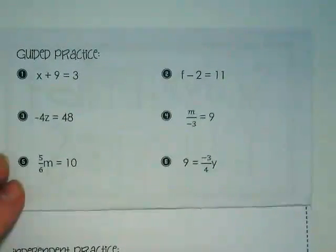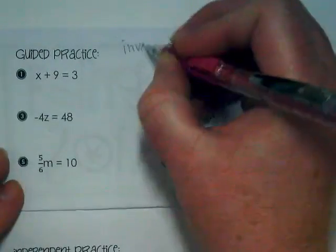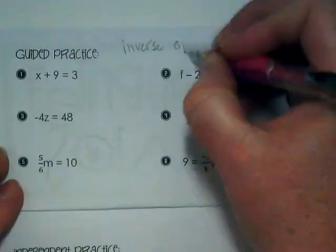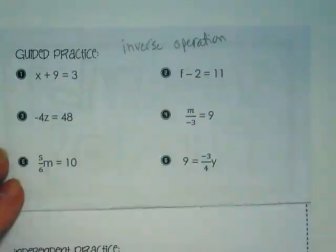When we are solving equations, we are always looking for an inverse operation. What that means is when I see addition, I do subtraction, the opposite. Inverse operations are opposite of multiplications. Inverse is division. Addition is subtraction.